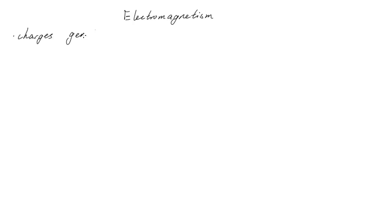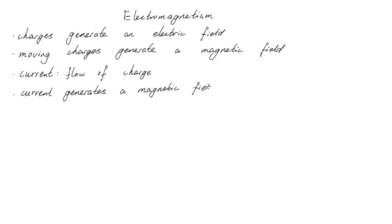We know that charges generate an electric field, and Airstead's discovery can be summarized by moving charges generate a magnetic field. A current is comprised of lots of moving charges, so we generally say a current creates a magnetic field.